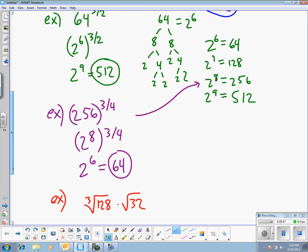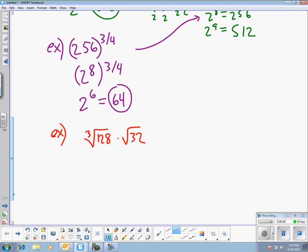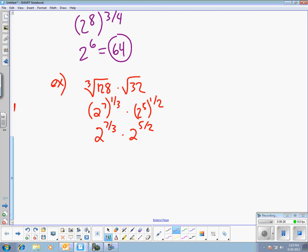So 128, I also learned up here in green that that's 2 to the 7th. And I also know that the cube root is a 1 third power. And 32, that's 2 to the 5th. And the square root is a one-half power. This is 2 to the seven-thirds times 2 to the five-halves. And if you have two powers with the same base, multiply them together, then you add the two powers, the two exponents. So I need to add seven-thirds and five-halves.